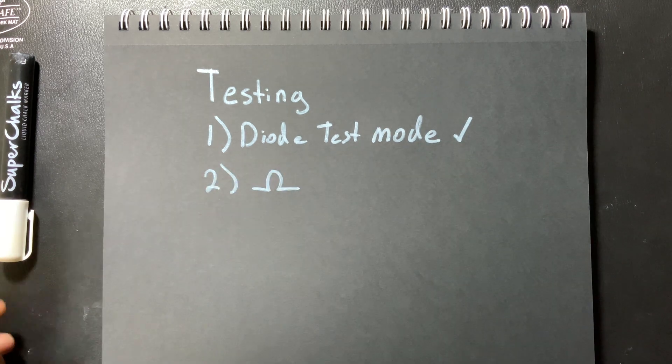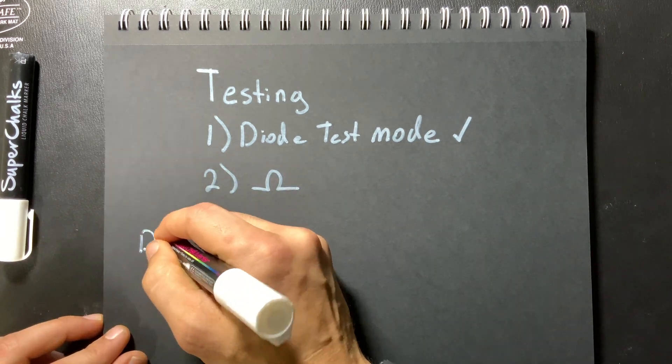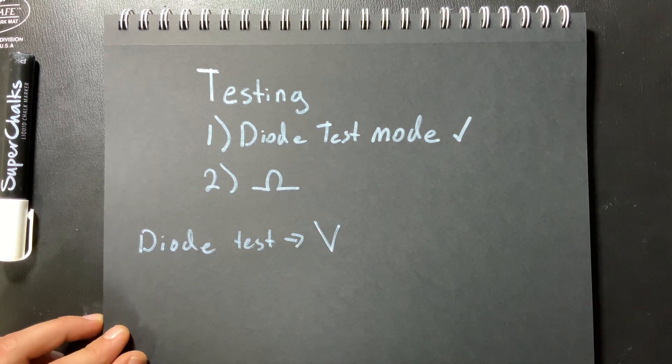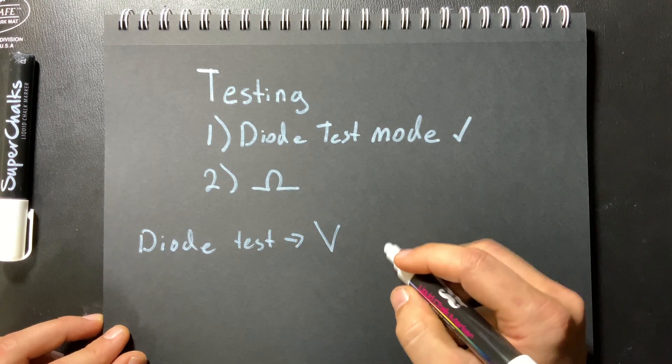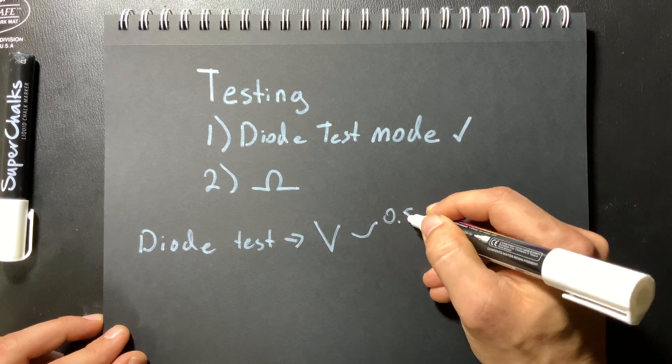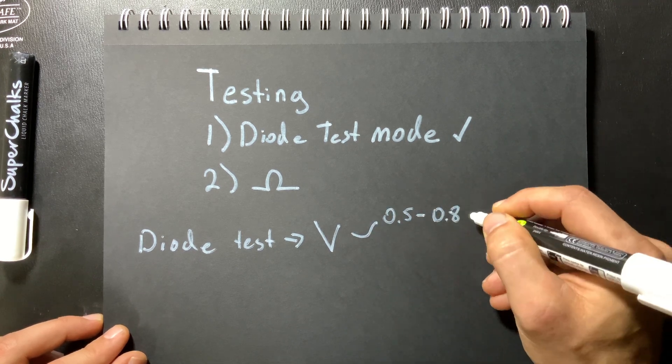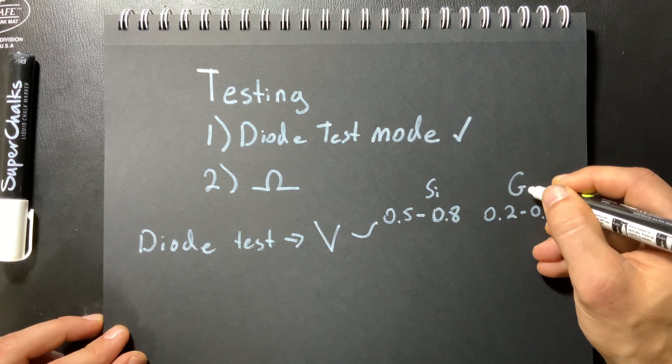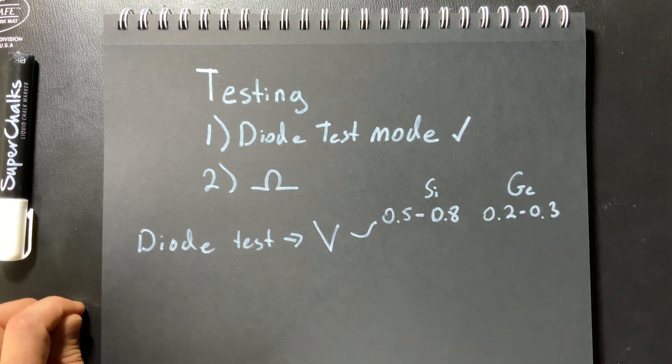Now when you're testing diodes there's a couple of different things that can happen. All right so you go to test a diode using the diode test mode. All right you're going to measure a voltage typically in millivolts. So for silicon diodes you're looking at about 0.5 to 0.8 volts and for germanium diodes 0.2 to 0.3 volts.